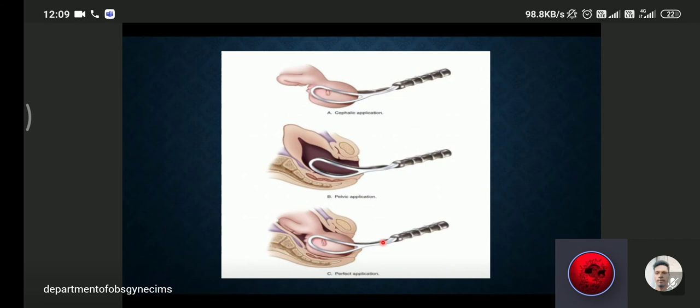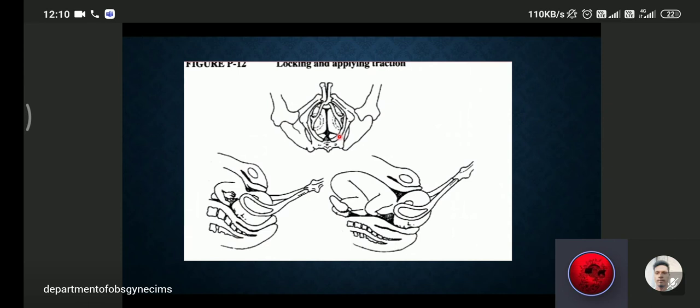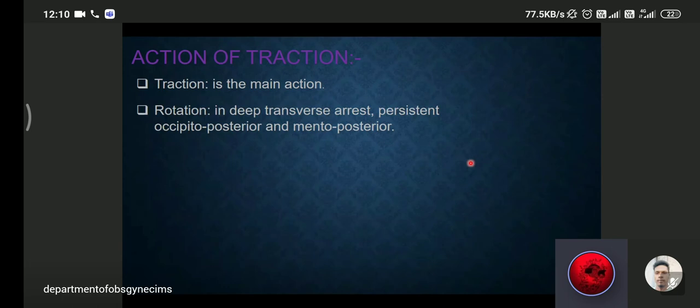After application of the forceps, the lock should be locked. Then we have to pull the head straight horizontal, then upward direction, and then forward direction to make the head visible and then the head comes out from the pelvis. The main action is traction, and rotation in deep transverse arrest, persistent occipital posterior and mento-posterior position only. There is rotation also.